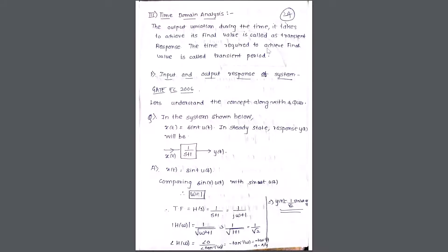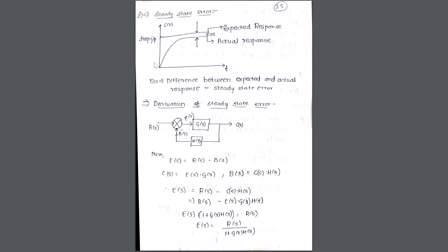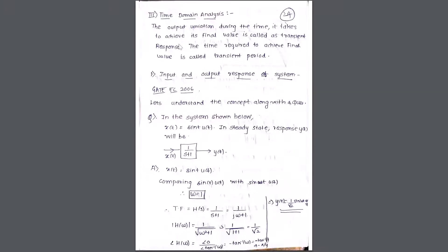What do we mean by transient and steady state? When you start a particular process, it takes time for the process to go from zero to a particular steady state value. The in-between phase wherein the process is moving from zero to the final value is the transient period. If you see the diagram, the process starts from zero and reaches a steady state, and the phase between zero and the steady state is the transient phase.